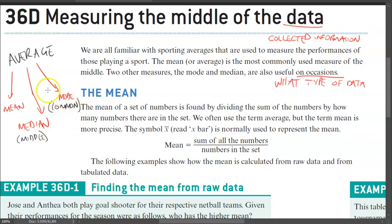These three different types of averages are used interchangeably depending on what type of data set you have. We're just going to be looking at what the mean is, how it works, the equation for it, and a few examples. So the mean of a set of numbers is found by dividing the sum of the numbers by how many numbers there are within a set. We often use the term average, but the term mean is more precise because there are three different types of averages that you can use.